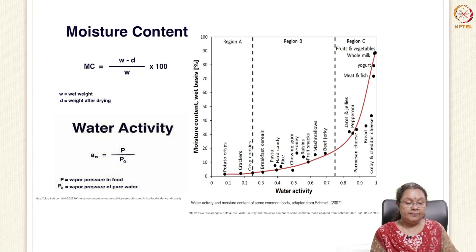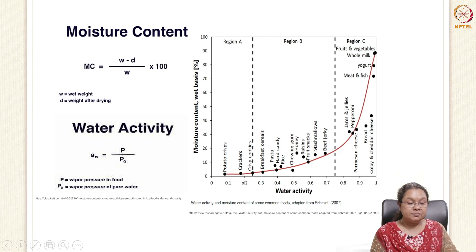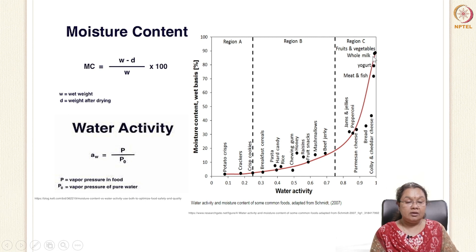A figure shows the water activity and moisture content of different food products. Water activity ranges from 0.1 to 0.9. Products like potato chips and crackers are extremely dry, with water activity of 0.1 to 0.3, and most microorganisms will not thrive at these conditions. Whereas products like fruits, vegetables, milk, meat, and fish have high water activities near 0.9 to 1, and high moisture content. So they are more prone to microbial attack and deteriorate easily, requiring a good food preservation and packaging system.